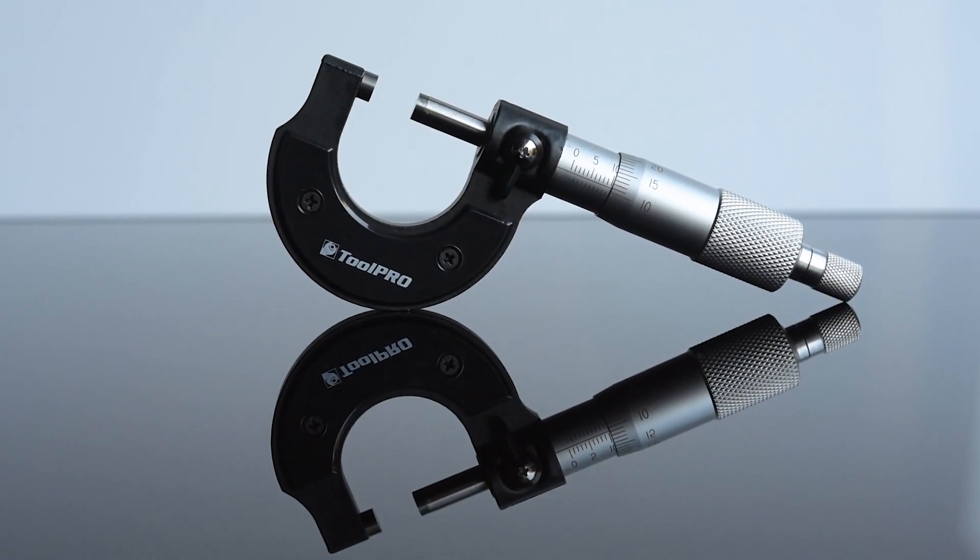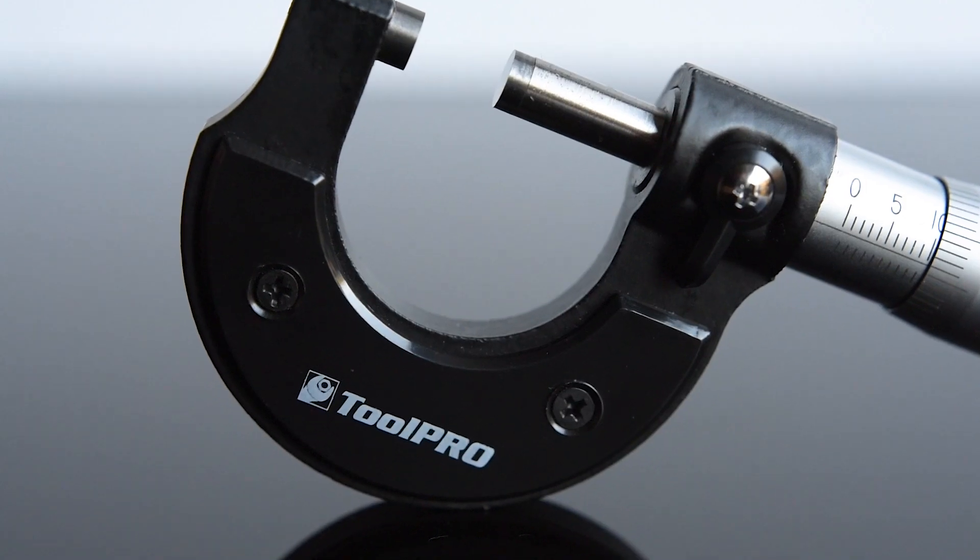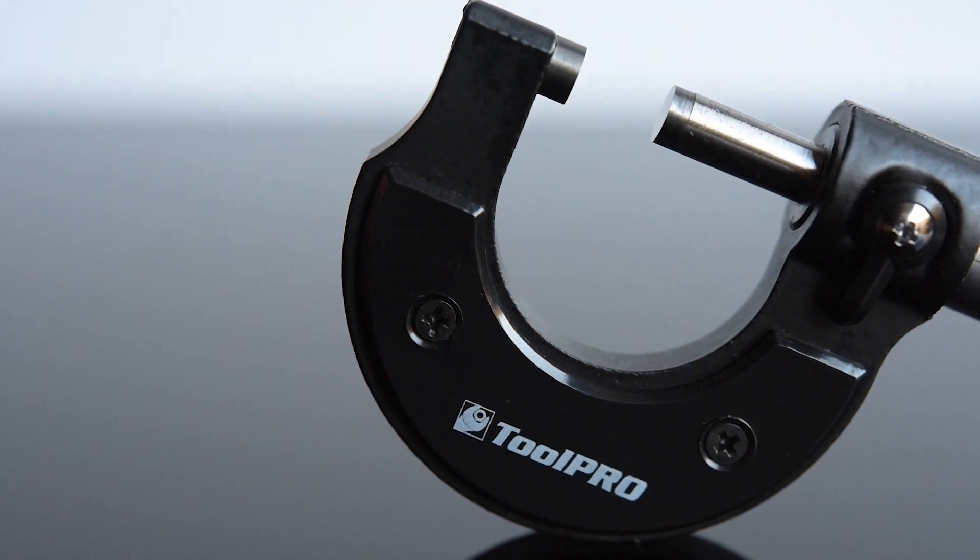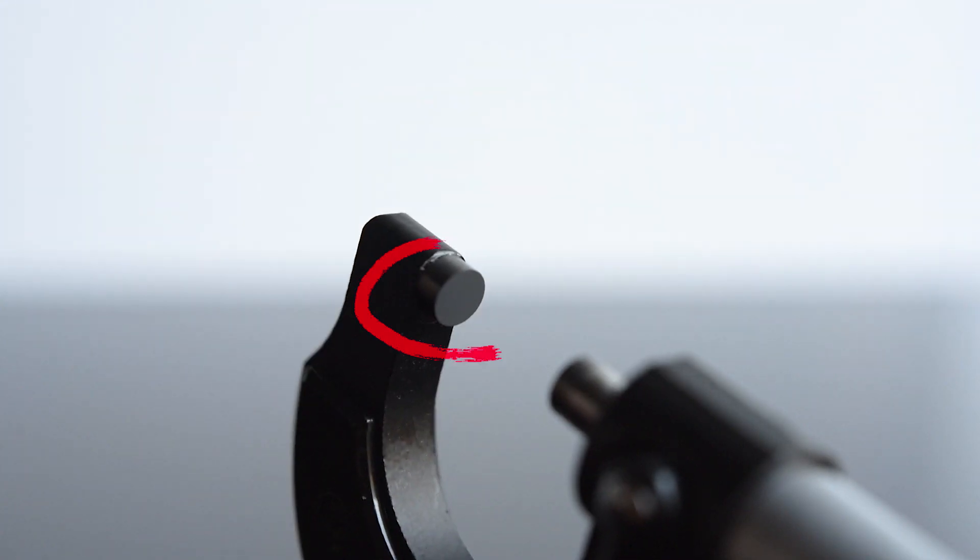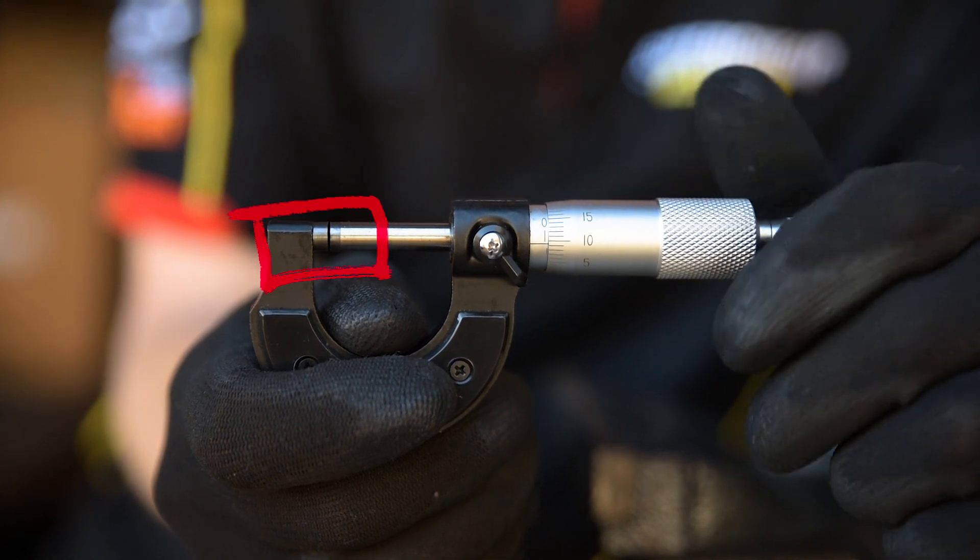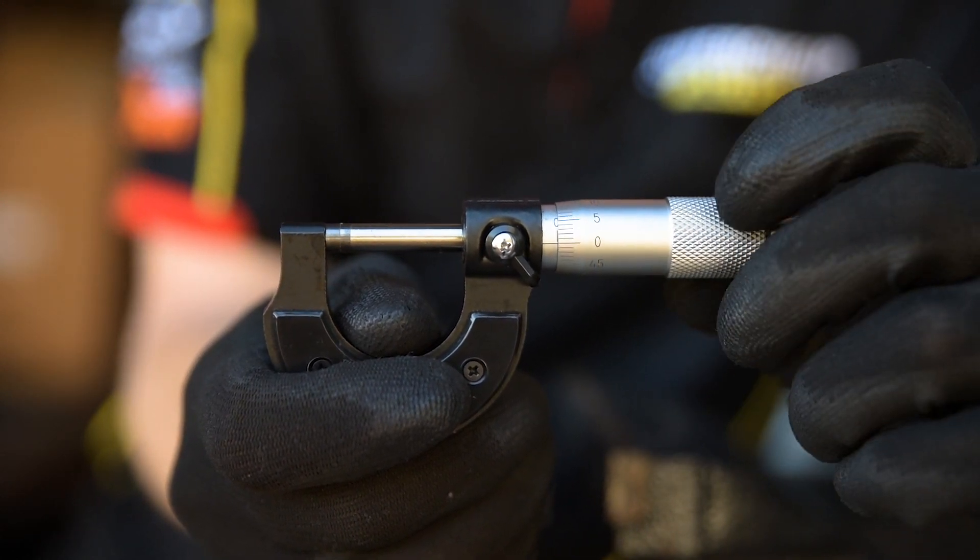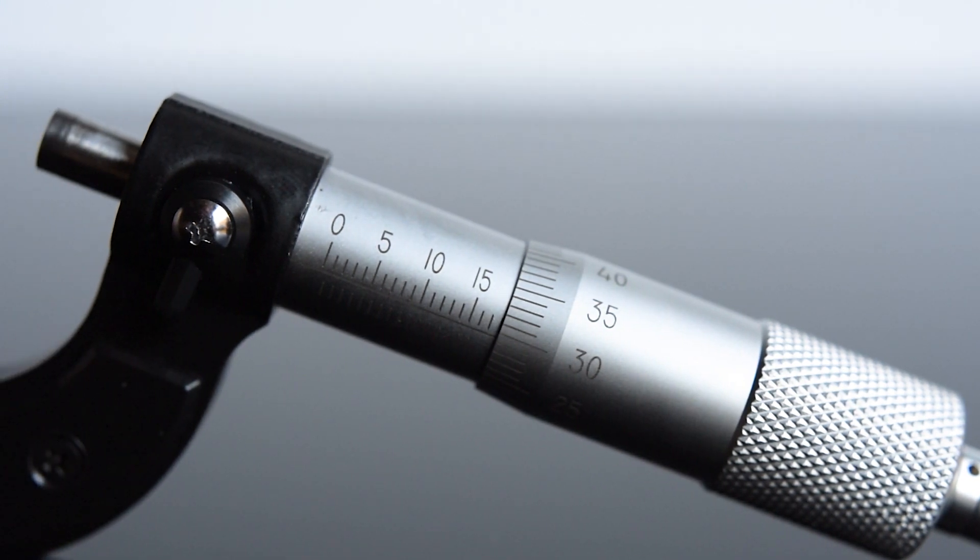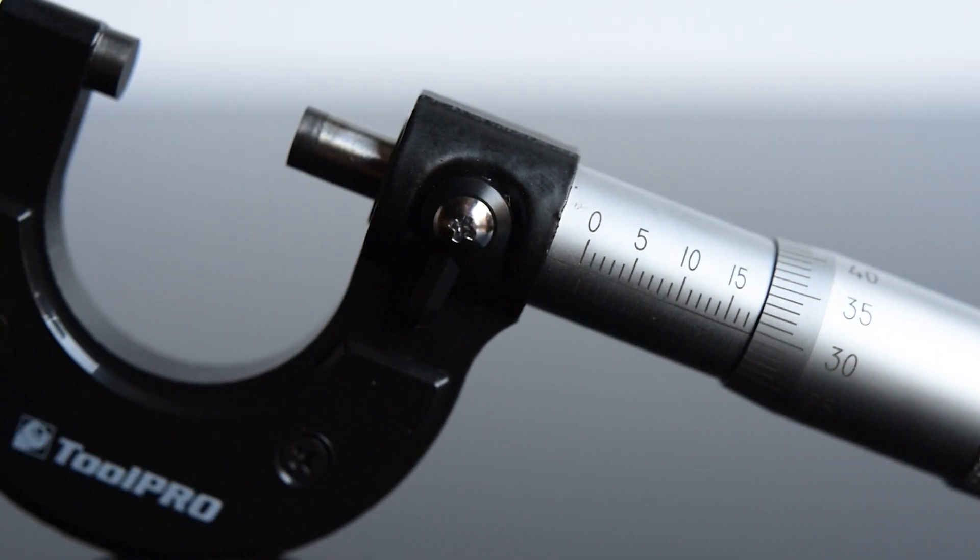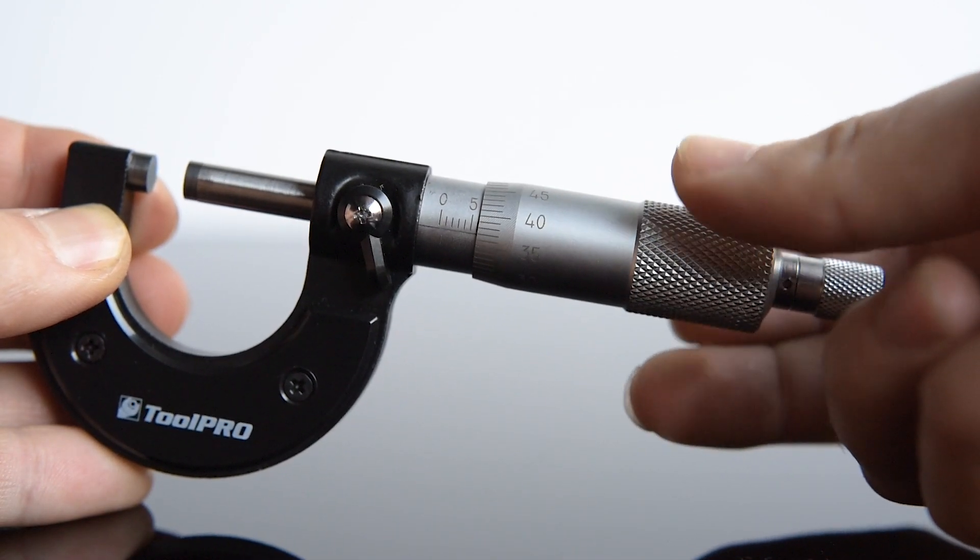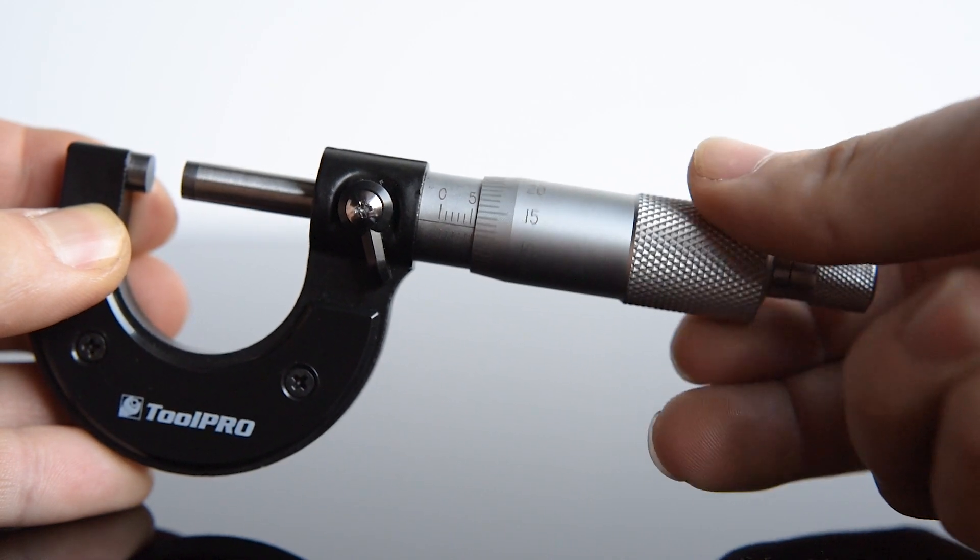Knowing the name of each part will help you understand your micrometer. The frame is the base of the whole tool with the spindle and anvil at the top. The ends of the spindle and anvil form the measuring faces. The sleeve displays the whole and half millimeter measurements. The thimble rotates around this as the spindle moves in and out.